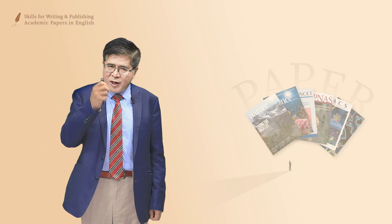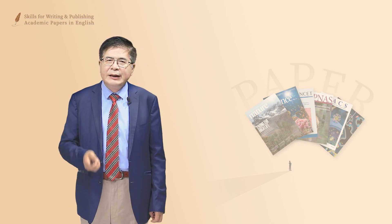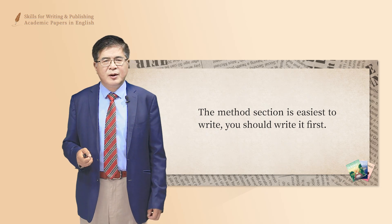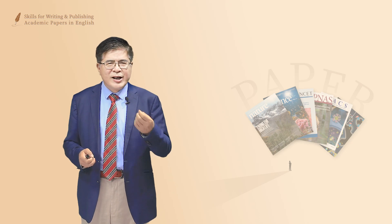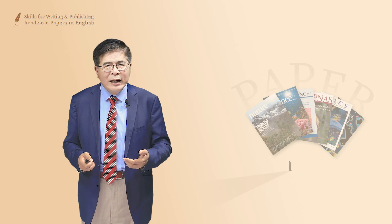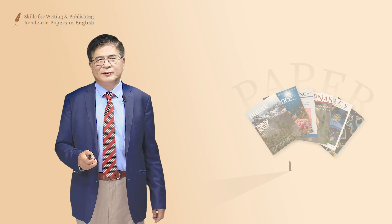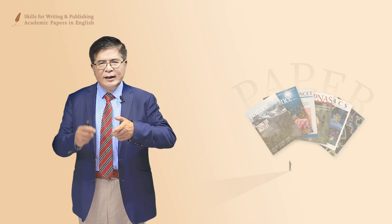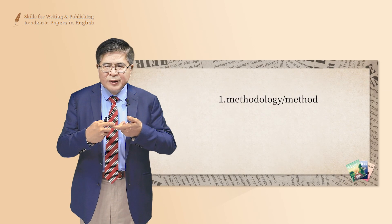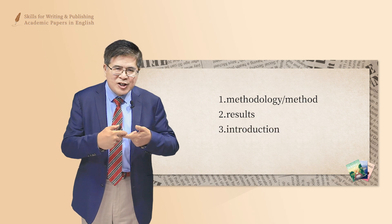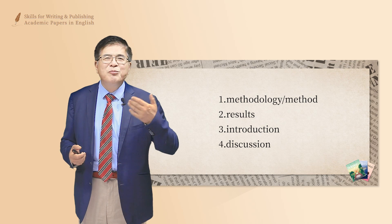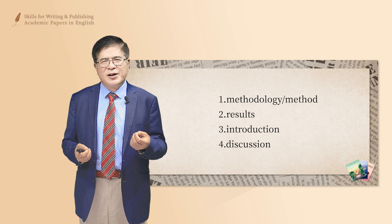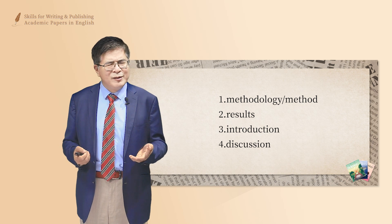Of all the sections in an academic paper, the method section is the easiest to write — and you should write it first. After writing the method section, you build up your confidence and momentum, having finished an entire section in one day. I tell my students that the recommended writing sequence is: methodology, results, introduction, then discussion. If you start with the introduction, you may get frustrated, and that mood carries into the results section. Start with the method section for good spirit.